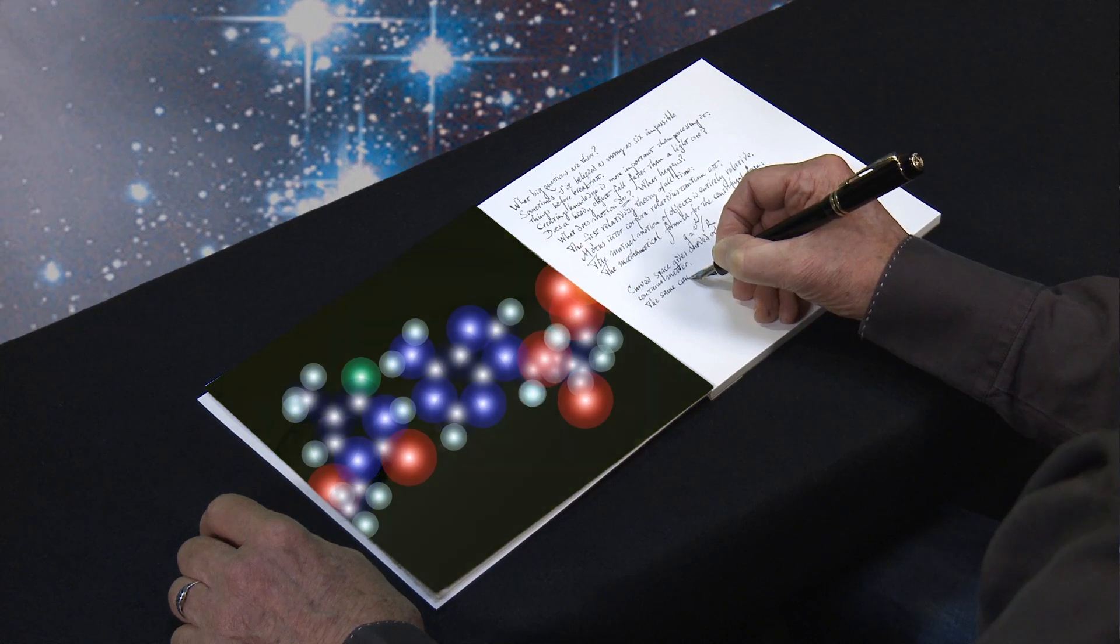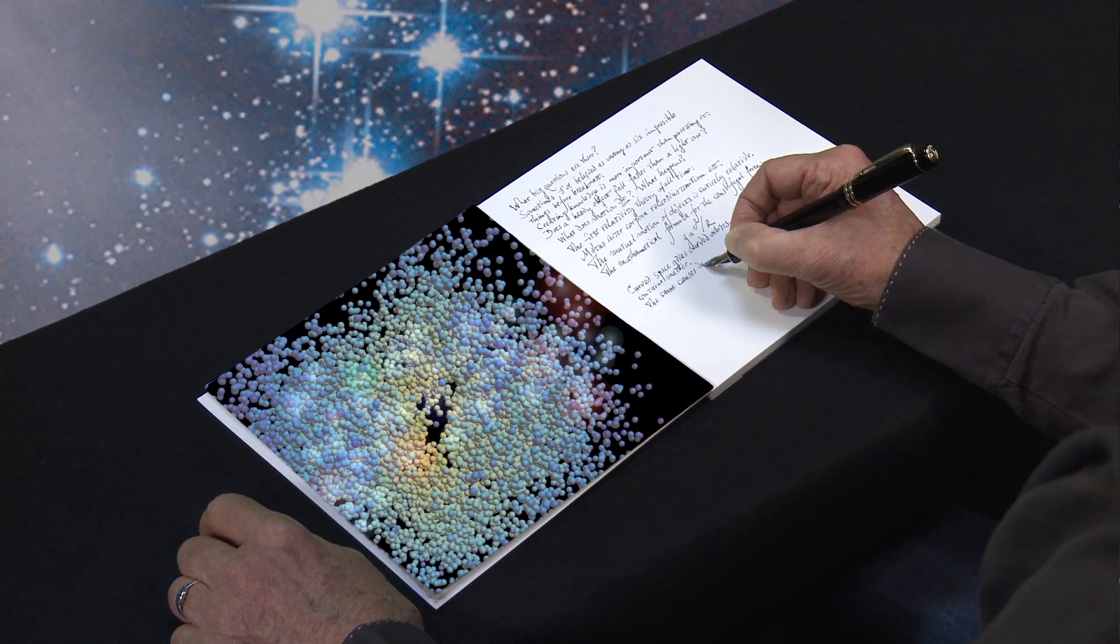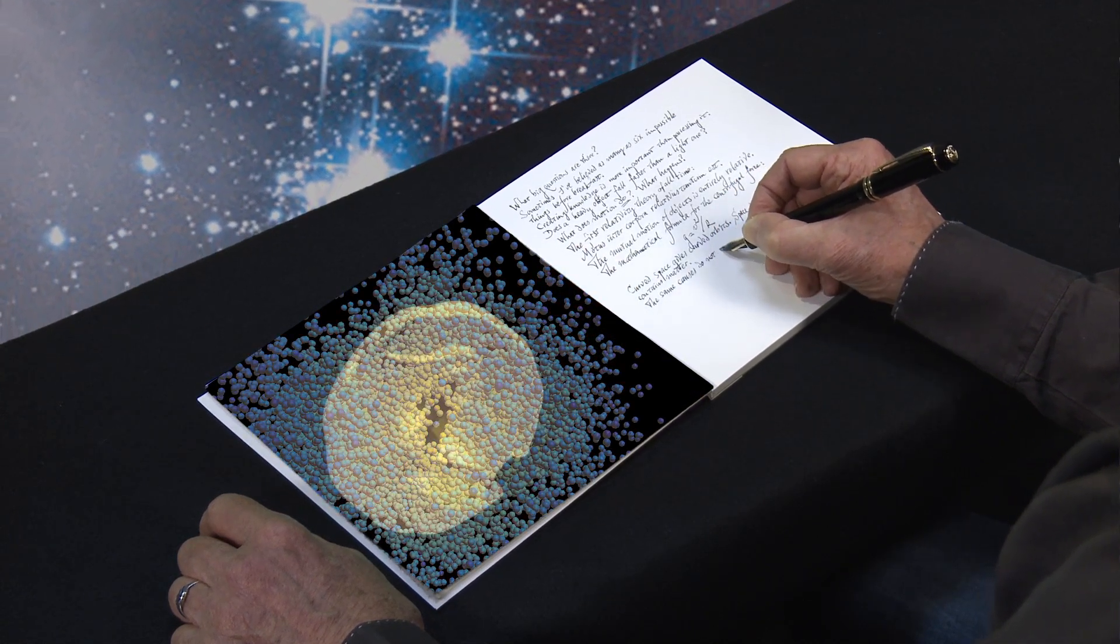Matter does very strange things. This super small world doesn't work with orbital motion like planets. Richard Feynman, another physics giant, found a way to describe it.